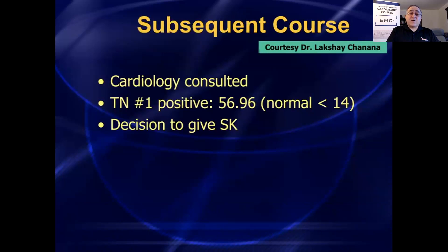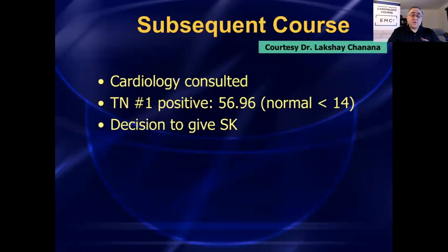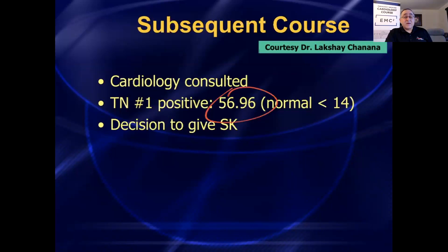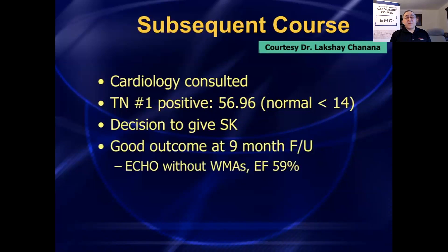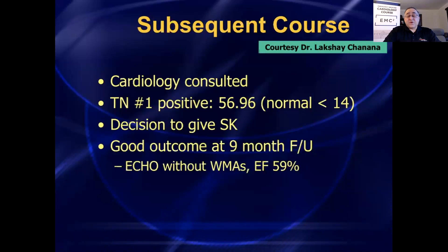This is a good outcome. Cardiology was consulted and agreed with the decision. Troponin came back markedly positive, so this was a true STEMI. Troponins rose and the patient ended up doing well. Nine months later they followed up — he's got a good EF, and his wall motion abnormality is pretty much resolved.